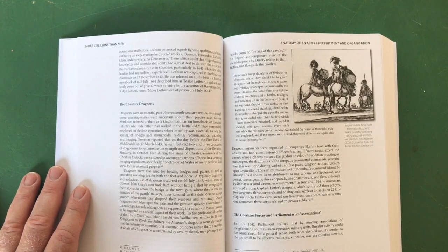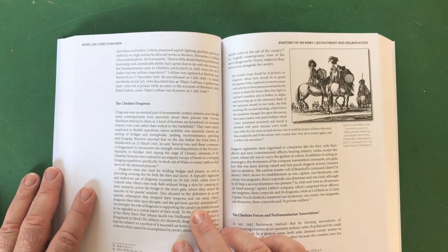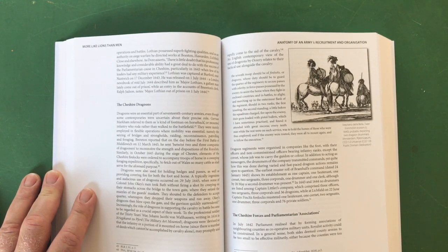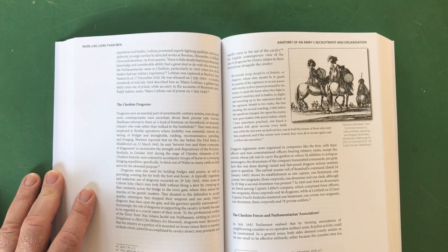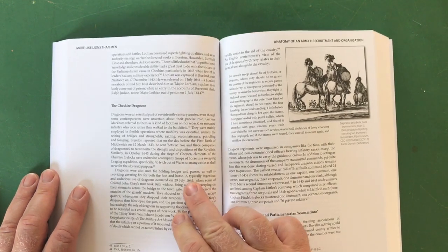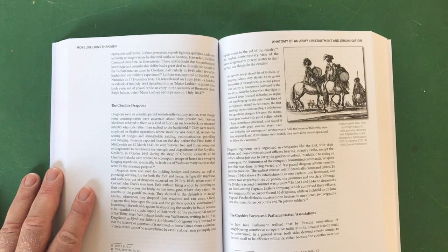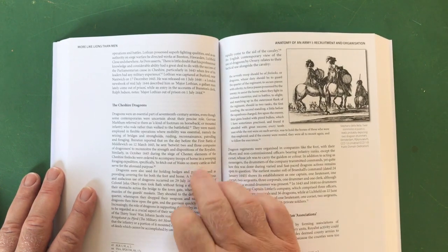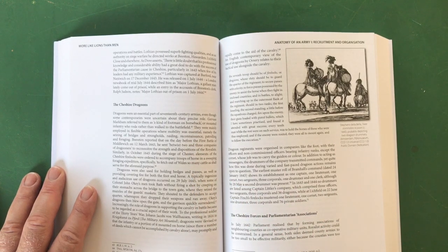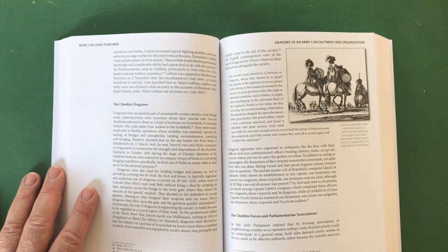So it's more about the recruitment here: the Cheshire Foot, the Cheshire Horse. A nice illustration of some drummers on horse. The Cheshire forces and parliamentarian associations, the Cheshire Dragoons. Dragoons - you shouldn't overlook dragoons. Dragoons were pretty significant in the English Civil War.